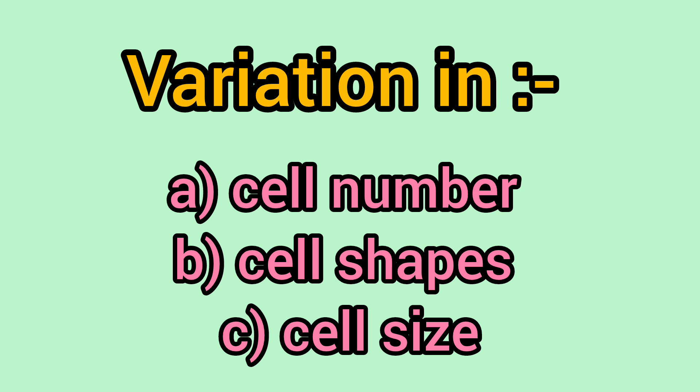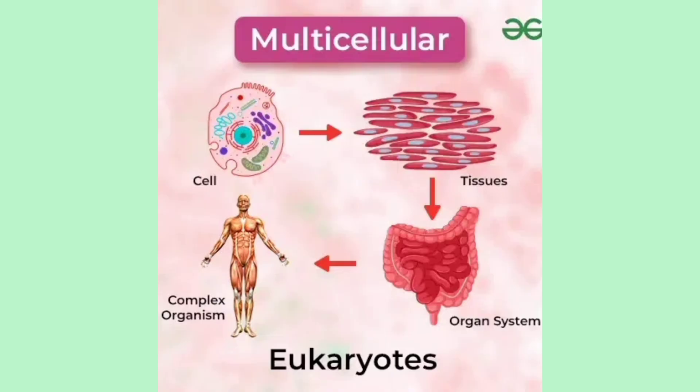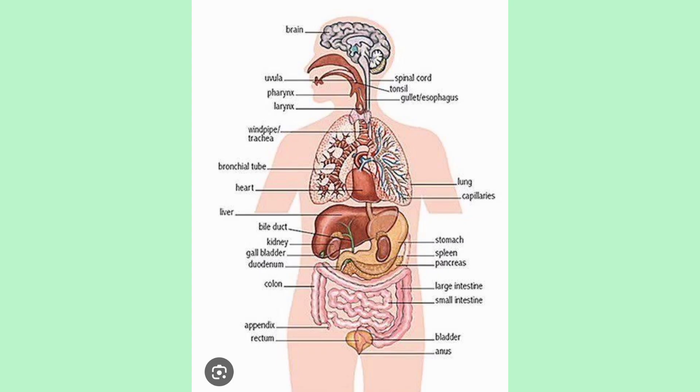Organisms show varieties in cell number, cell shape and cell size. Firstly, let us discuss about varieties in cell number. The first one is multicellular organisms — organisms which are made up of more than one cell are called multicellular organisms. The best example is humans, because the human body is made up of trillions of cells.